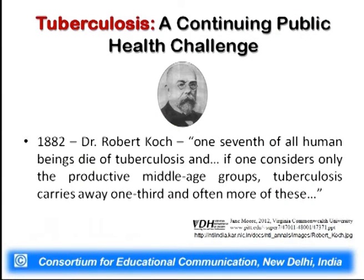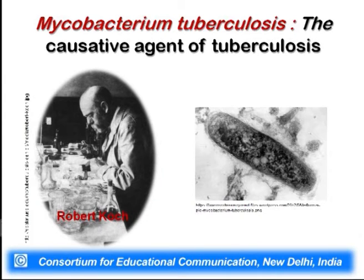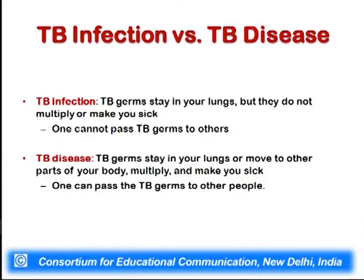The tuberculosis bacterium was first isolated and identified by Dr. Robert Koch in the year 1882. The bacterium is called Mycobacterium tuberculosis, which is the causative agent of tuberculosis. We can see Dr. Robert Koch working in his laboratory and the electron micrograph of the tuberculosis bacteria.